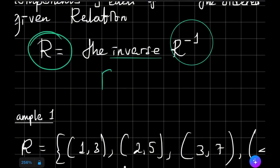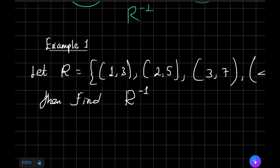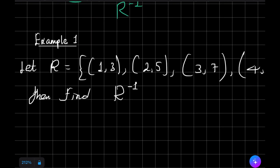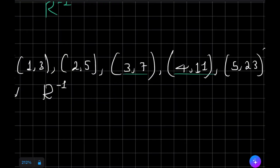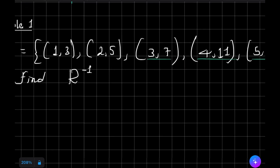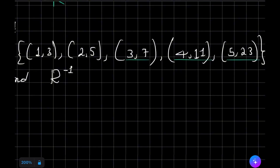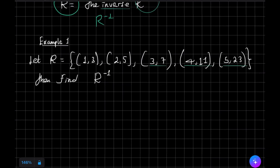Let's make an example. Let R be a relation where R contains the ordered pairs: (1, 3), (2, 5), (3, 7), (4, 11), (5, 23). These are the numbers in the relation.